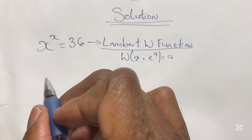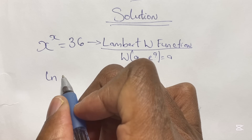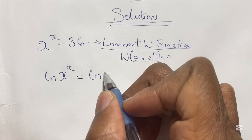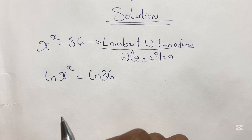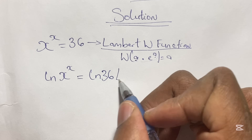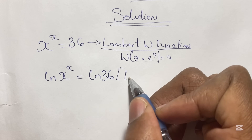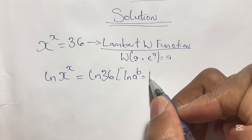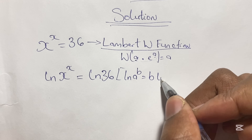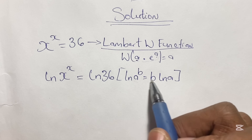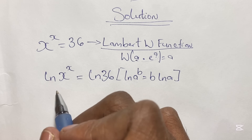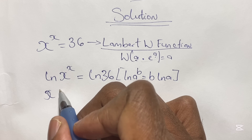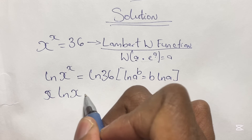Taking this equation, we start by taking the natural log of both sides, so we have ln(x^x) = ln 36. Using the logarithm power rule — where ln(a^b) equals b·ln(a) — we can rewrite the left side, giving us x·ln x = ln 36.